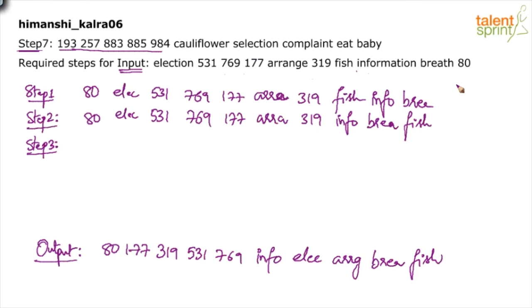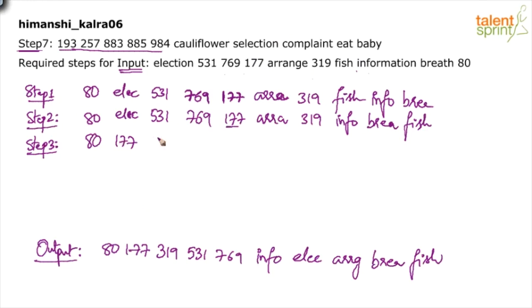An important tip: always write steps in a properly aligned fashion so you can detect if you've repeated or missed a word. In step three, bring 177 to the second position — 177 has been placed, so don't copy it again. Copy everything else: election, 531, 769, arrange, 319, info, fish, bread.